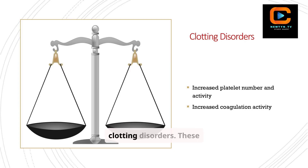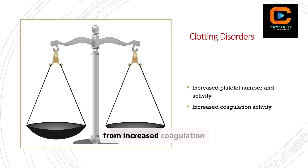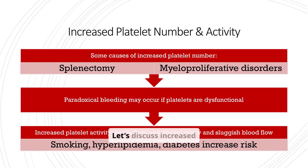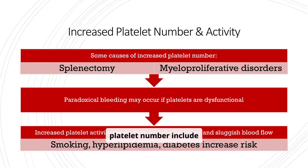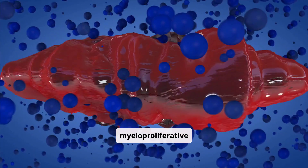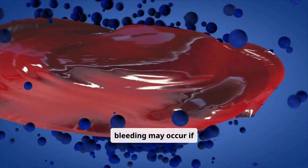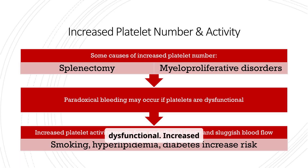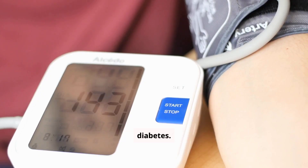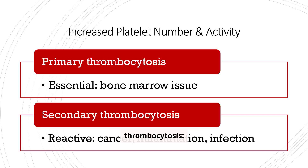Now we'll move on to clotting disorders. These disorders can arise from increased platelet number and activity or from increased coagulation activity. Some causes of increased platelet number include splenectomy and myeloproliferative disorders. Paradoxical bleeding may occur if platelets are dysfunctional. There are two types of thrombocytosis: primary thrombocytosis, which is essential and related to a bone marrow issue, and secondary thrombocytosis, which is reactive.